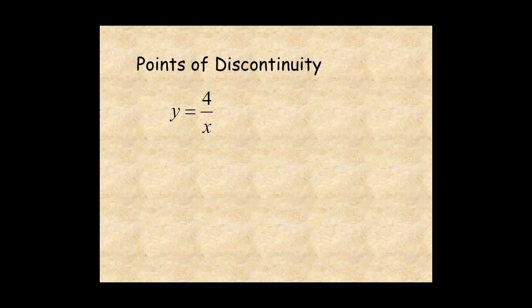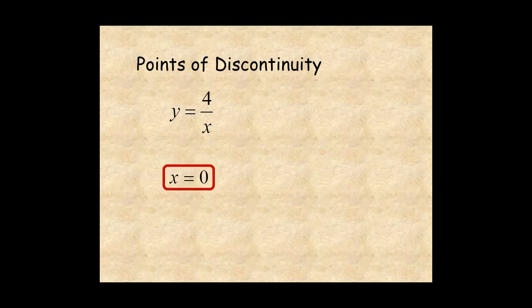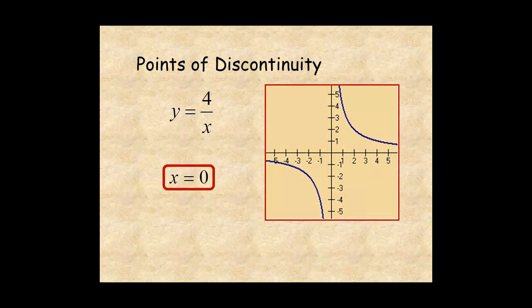For the function y equals 4 over x, when you set the denominator equal to 0, right away you have a point of discontinuity at x equals 0. Here is the graph of the function. You can see from the graph the function isn't defined at x equals 0.